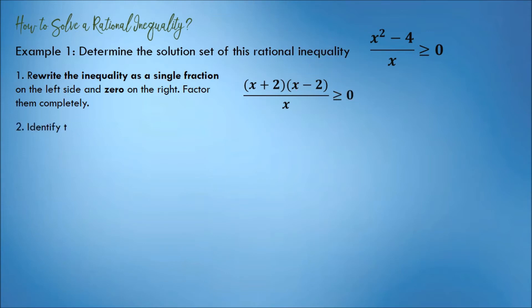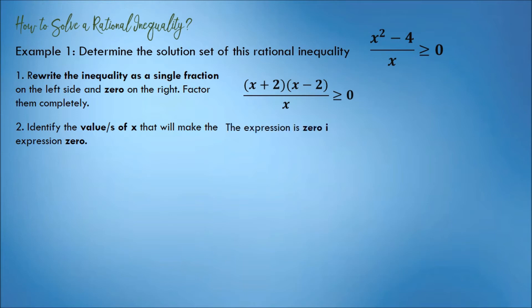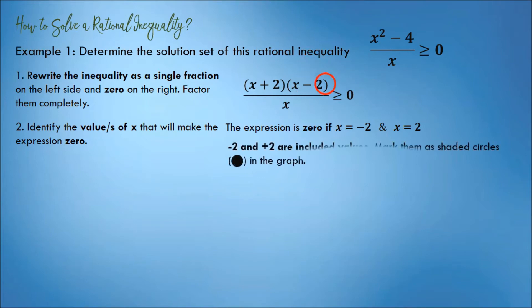Step number 2. Identify the value or values of x that will make the expression equal to 0. The expression is 0 if x is equal to negative 2 and positive 2. Those values are included because of the inequality symbol greater than or equal to. Mark negative 2 and positive 2 as shaded circles in the graph.